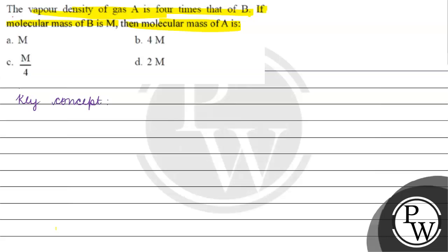vapor density. Vapor density times 2 is basically equal to the molecular mass.